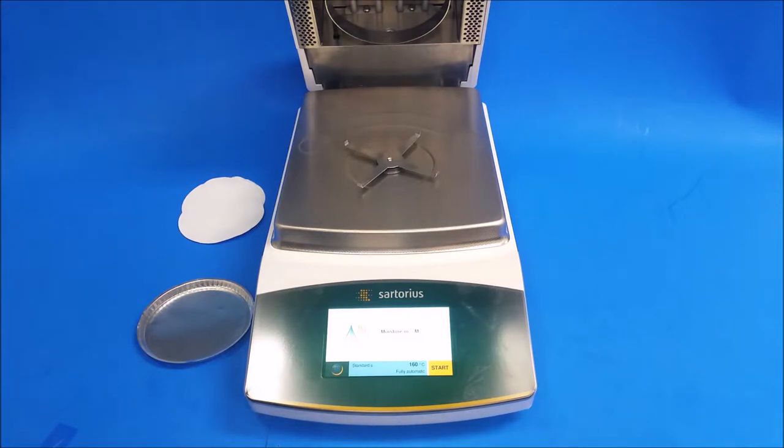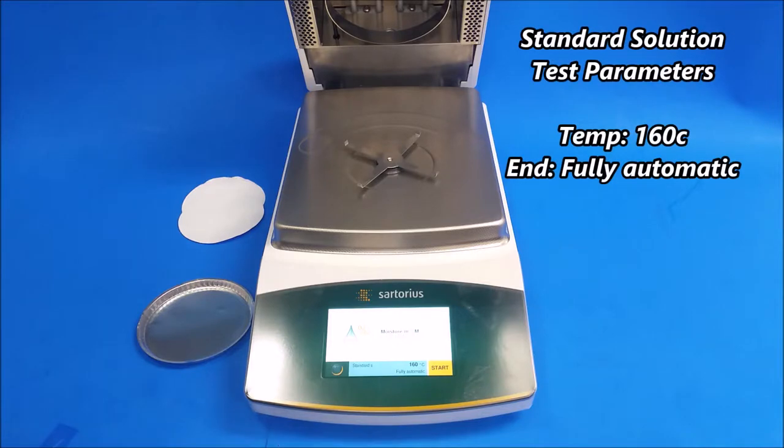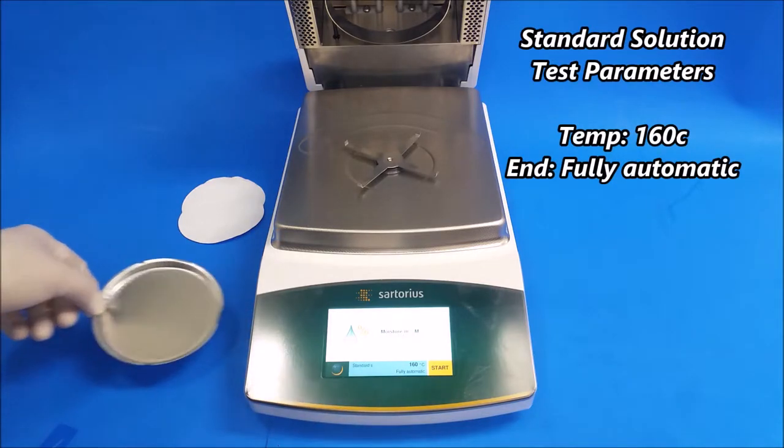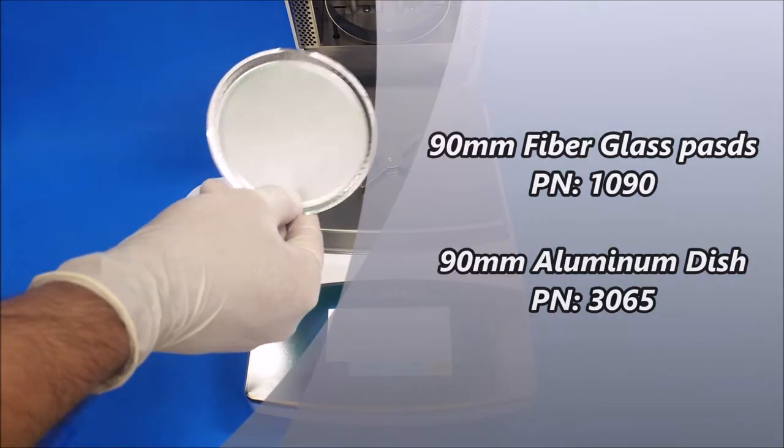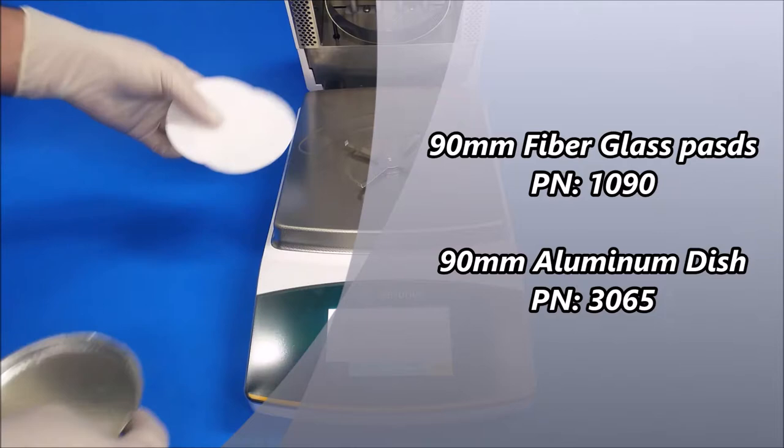Now we're going to run a standard solution test. That's a liquid that we have here. I already set it up in the specifications that we need to run a standard solution. First thing we're going to need is an aluminum dish and two pads.